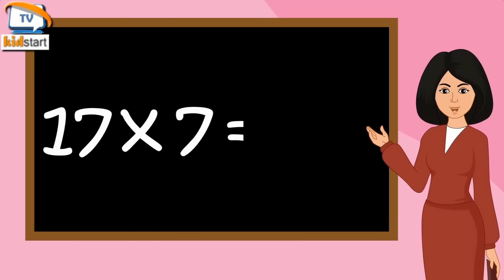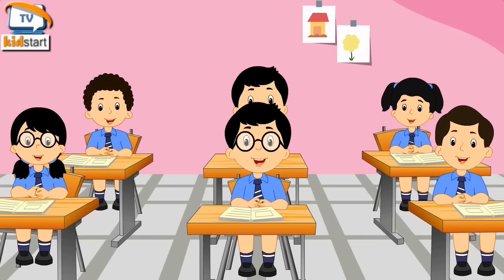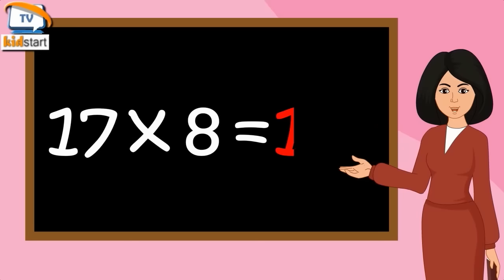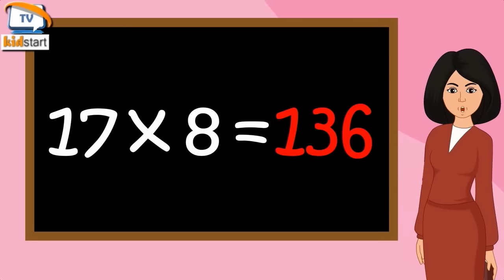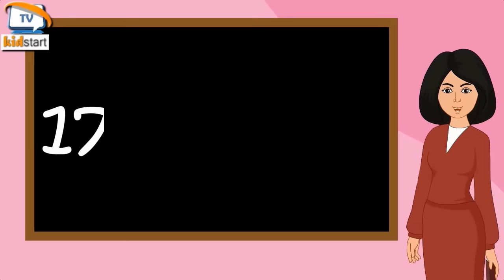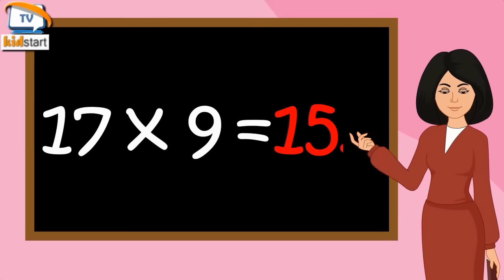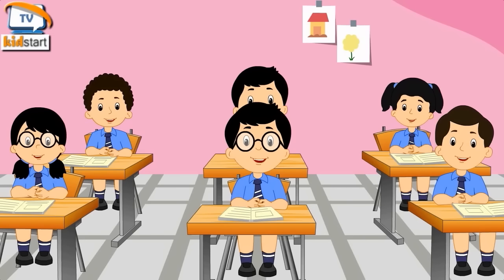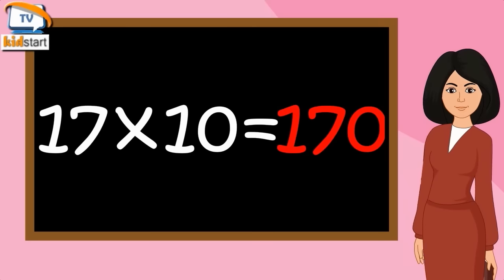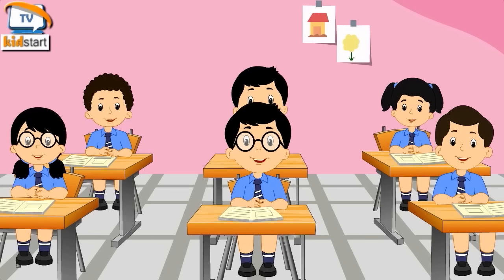17 sevens are 119. 17 eights are 136. 17 nines are 153. 17 tens are 170.